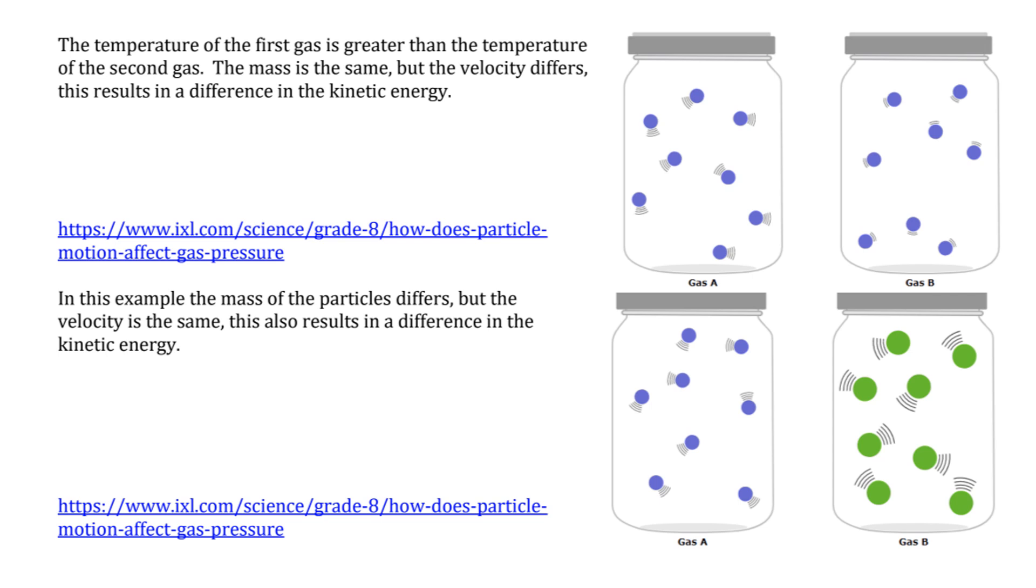The temperature of this first gas here is greater than the temperature of the second gas. The mass is the same, but the velocity differs. This results in a difference in the kinetic energy. So whenever we're looking at kinetic energy, mass, and velocity, most likely the kinetic energy will be the same. They may say the temperature is the same for both gases, but the mass is increased for one gas. What is the effect on velocity?